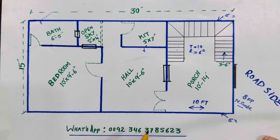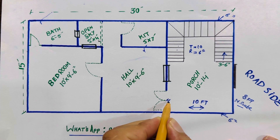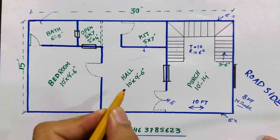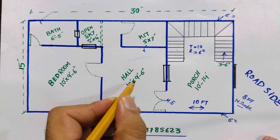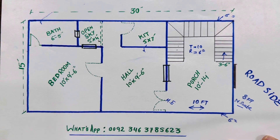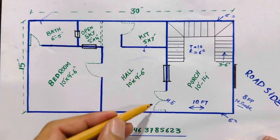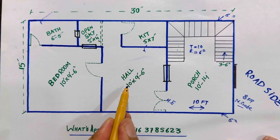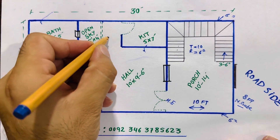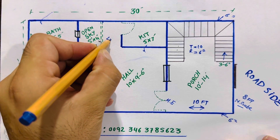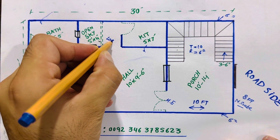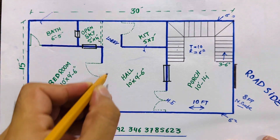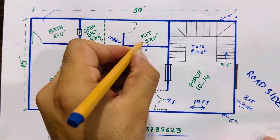You can see this is the main entrance to this hall. Size is 10 feet by 9 feet 6 inches — this is 9 feet 6 inches and width is 10 feet. You can see this is a small lobby. When you enter to this lobby...